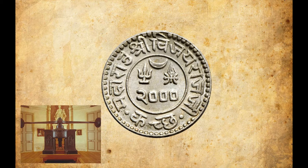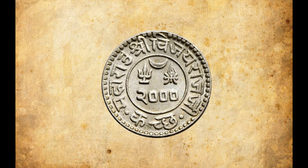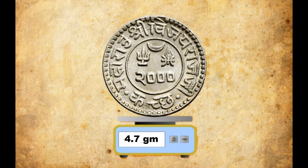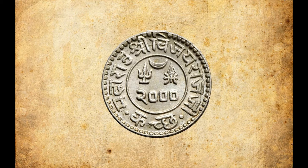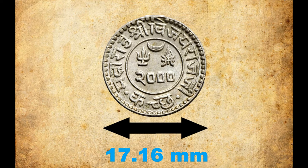It is a milled coin belonging to the 6th series of Regal Issues. The coin is made of silver and weighs around 4.7 grams. It is round in shape and has a diameter of 17.16 millimeters.